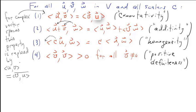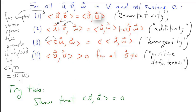Try this exercise: show that the inner product of the zero vector with itself is equal to zero. Here's a hint: use property three. Put this on pause and we'll check answers together.